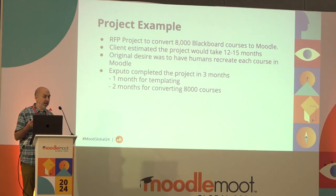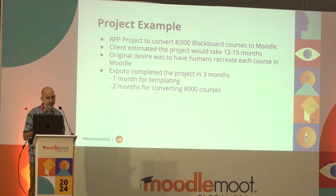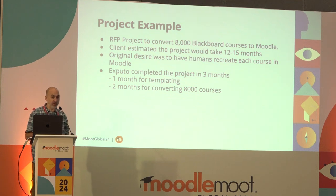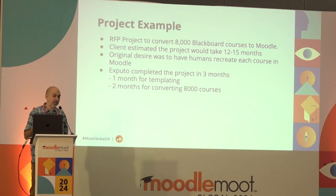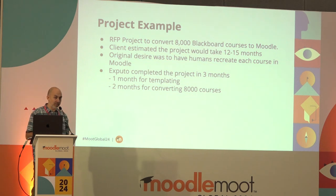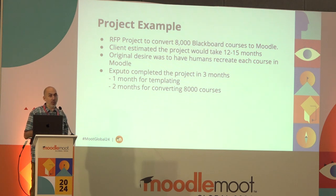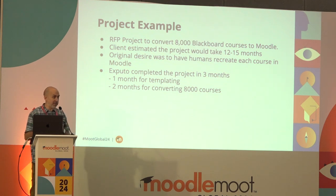Here's a quick project example. We had an RFP to convert 8,000 Blackboard courses to Moodle. The client estimated it would take 12 to 15 months. We won the project by going in front of their board and saying we could do it in three months. We actually converted 30 of their courses live in the demo. It ended up being one month for templating — meeting with stakeholders across all departments — and two months of converting the 8,000 courses. The template is the time-intensive aspect; the actual conversion is rapid.